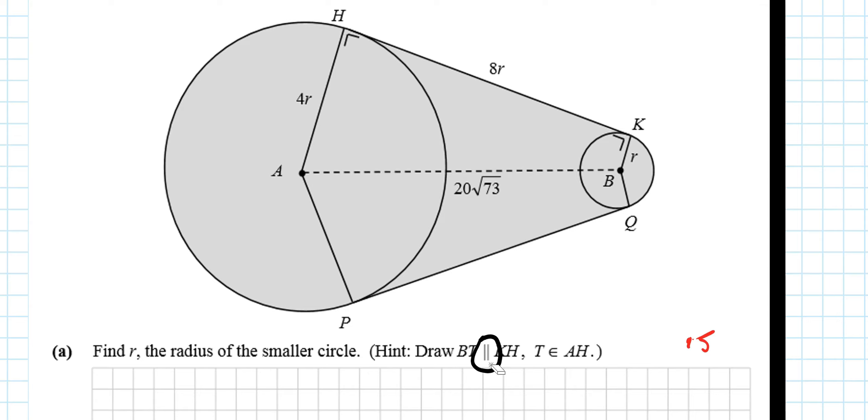Find r, the radius of the small circle. Hint: draw BT parallel to KH. So there's no T marked in, so where's KH? This is KH, and if I were to slide it down and mark this point here being T, I would get a right angle triangle. I'm going to mark this right angle triangle in red. What do I know about this right angle triangle? I know this length here, 20 root 73.